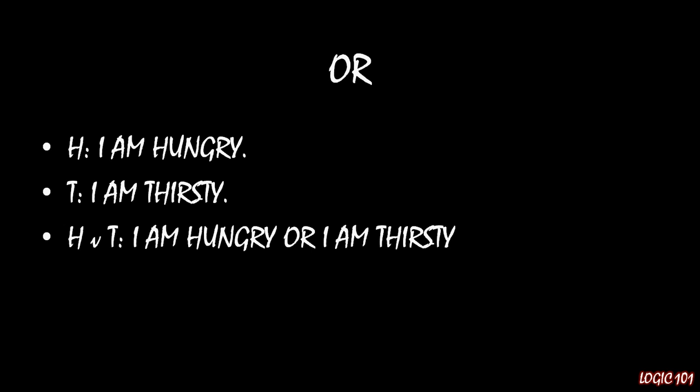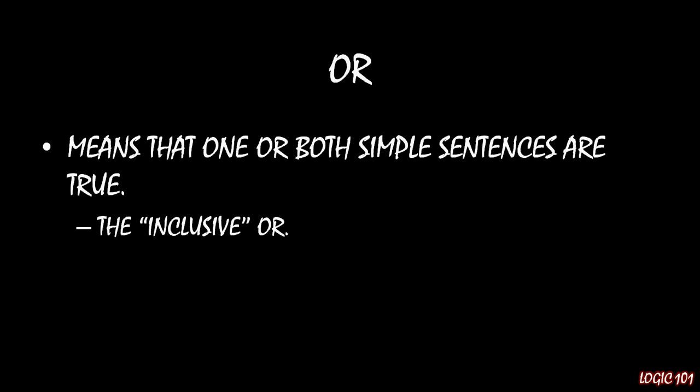When we use this V or this wedge, we are using it to represent what's known as the inclusive OR. That means that one or both of the simple sentences are true: I am hungry, or I am thirsty, or I am both hungry and thirsty. That is what H∨T means.